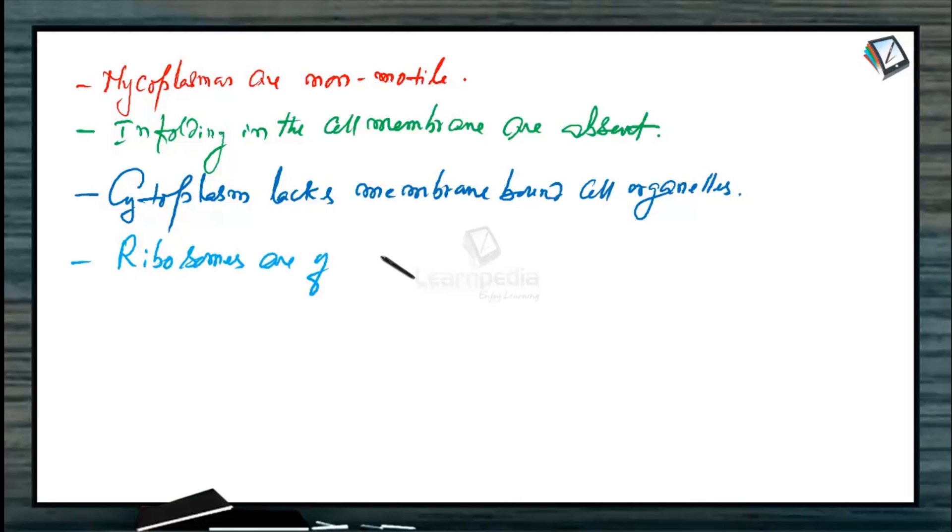Ribosomes are of 70s type. DNA is double-stranded and folded.